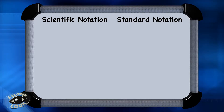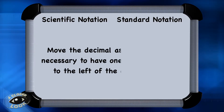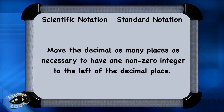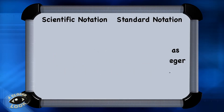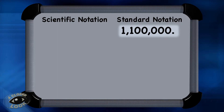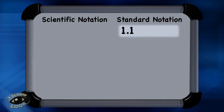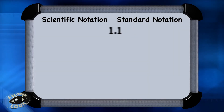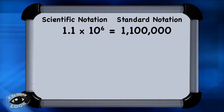Now let's practice a few going the other way, from standard notation to scientific notation. Remember, if you're going to convert to scientific notation, move the decimal as many places as necessary to have one non-zero integer to the left of the decimal place. In 1,100,000, there's an understood decimal at this spot. So move that decimal all the way over — one, two, three, four, five, six places. That's six places you had to move the decimal. To write this in scientific notation, write what you're left with, which is 1.1 times 10 to the sixth power.